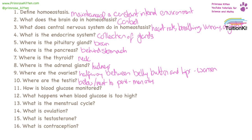Blood glucose is monitored in a combination of the liver and insulin. When blood glucose is too high, the liver converts it to glycogen.